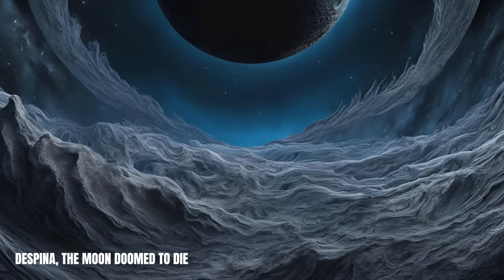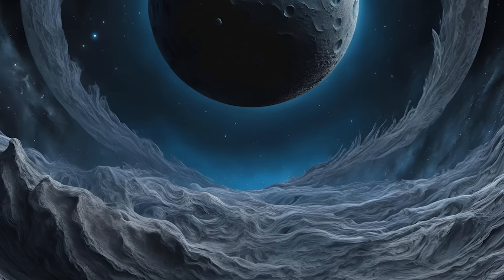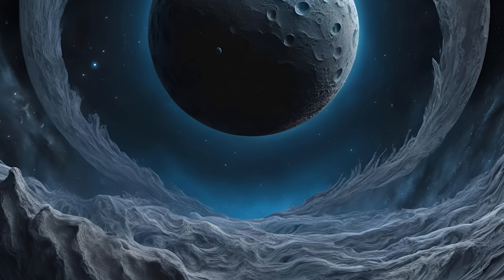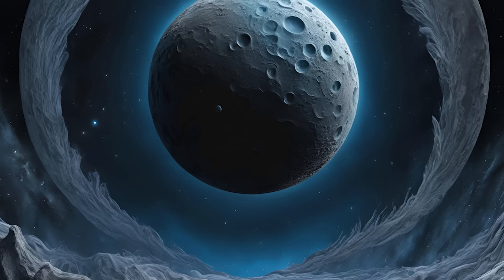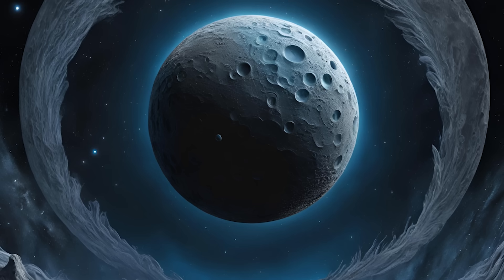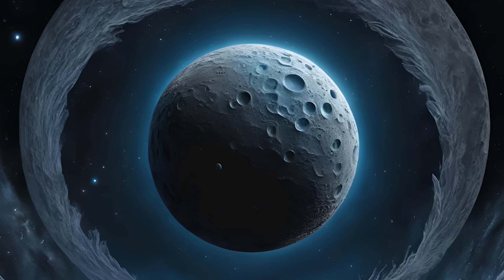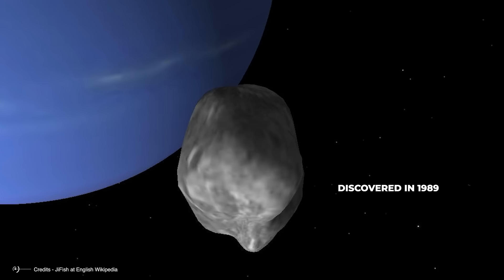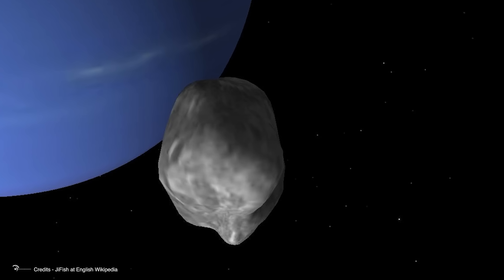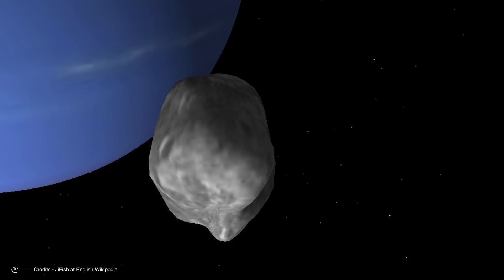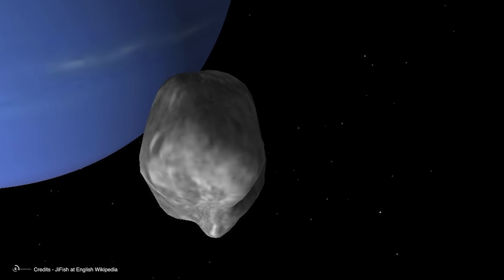Despina, the moon doomed to die. Did you know one moon of Neptune is doomed to disappear? We talk about Despina, one of Neptune's inner moons in a dangerous orbit, slowly bringing it to its end. This moon, discovered in 1989 by the Voyager 2 probe, orbits just 52,500 kilometers from the center of Neptune, placing it below the radius of the planet's synchronous orbit.